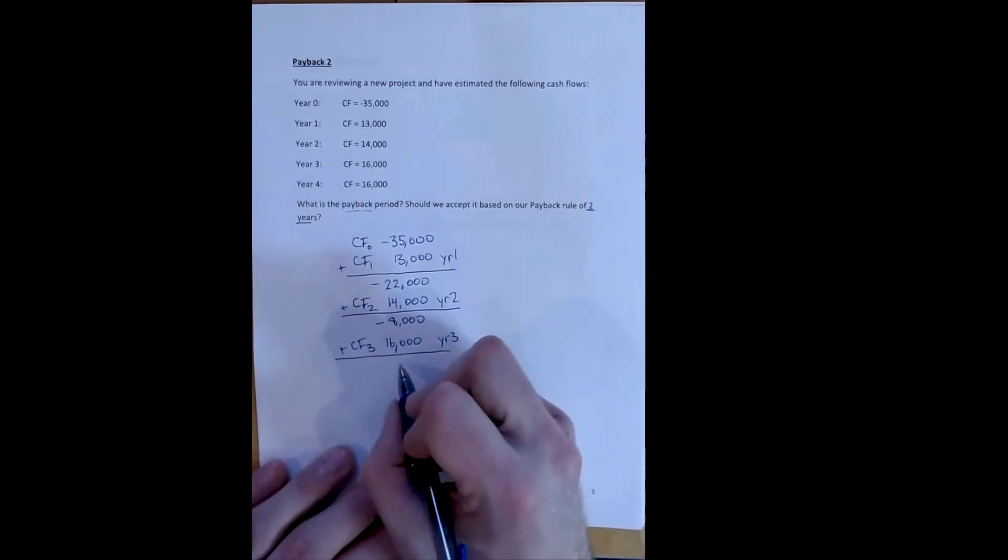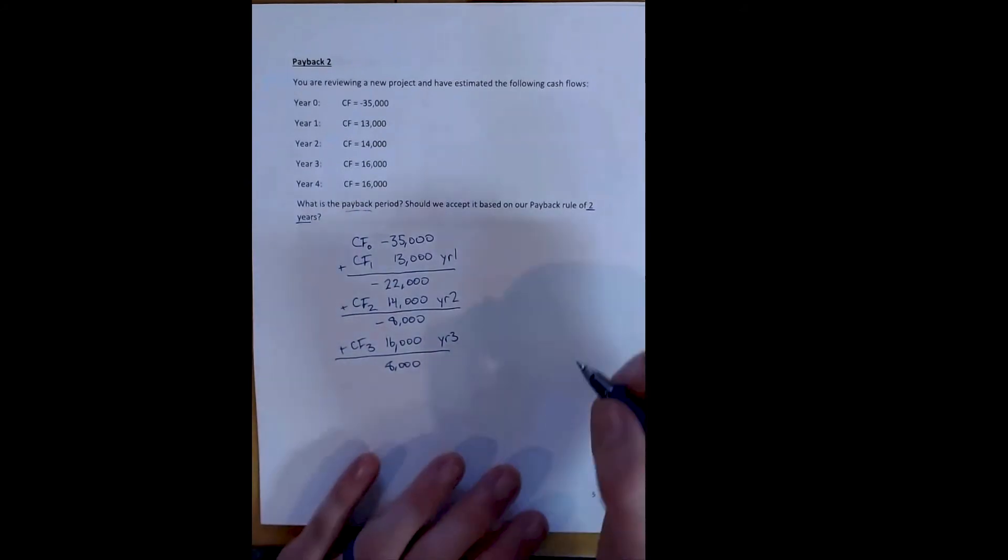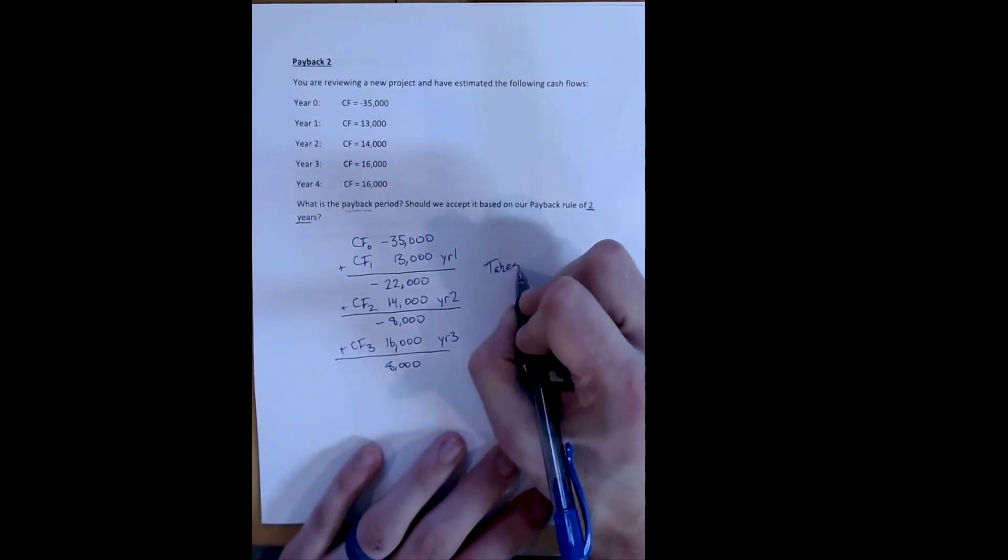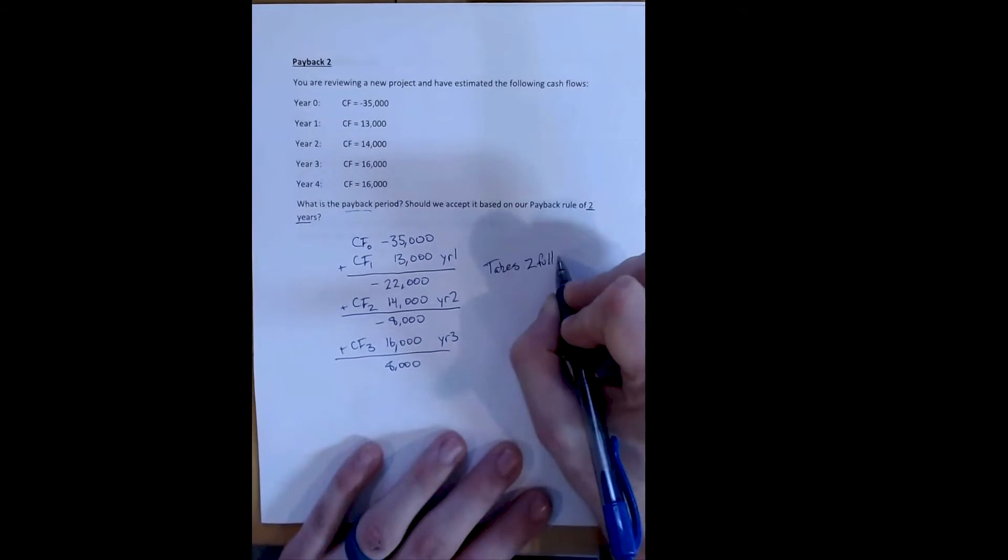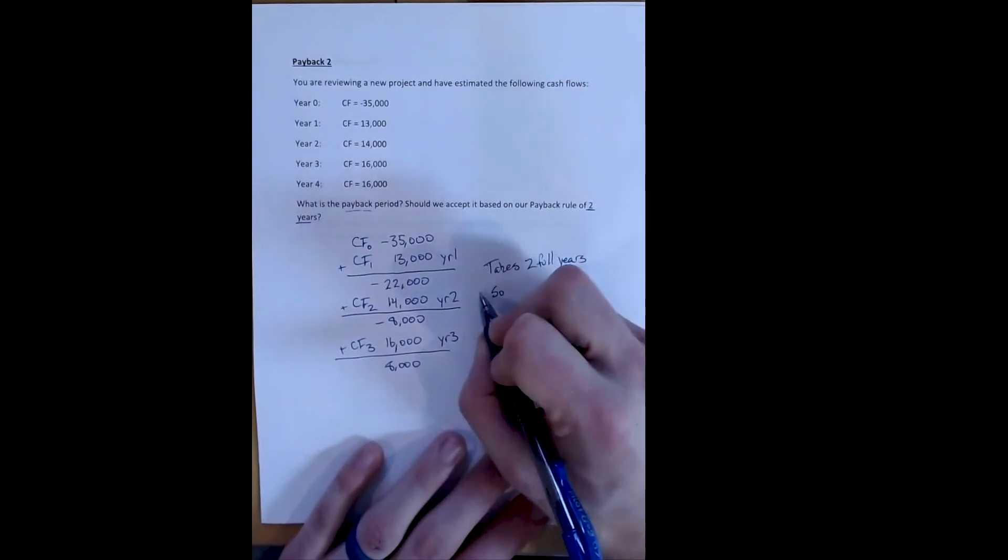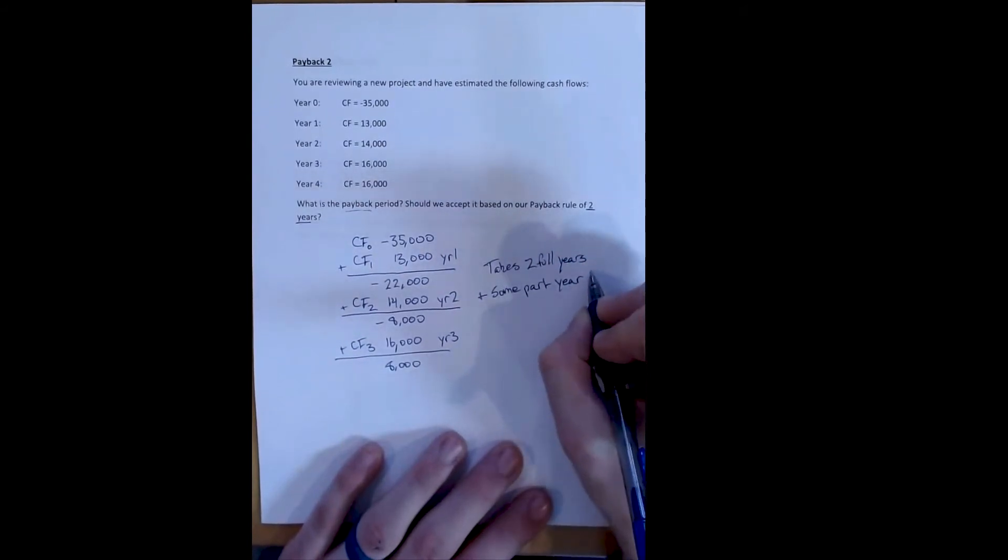At some point during year three, we will have covered our initial cost. We will have equaled our positive cash flows and our negative cost. That means we've taken two full years and some part of year three to pay back this project.